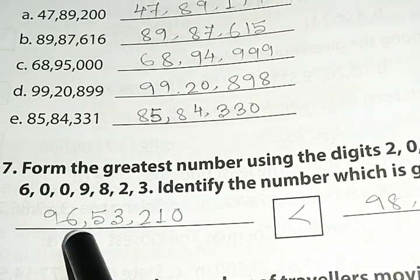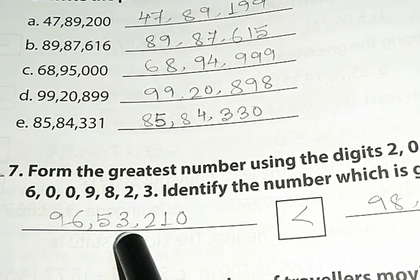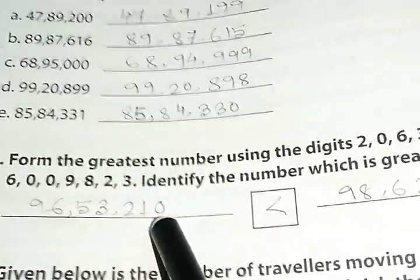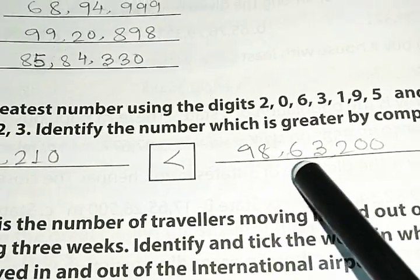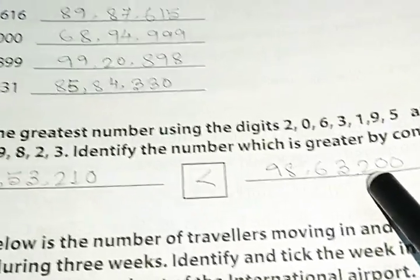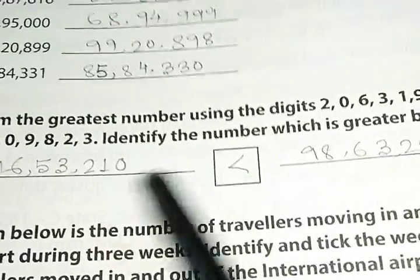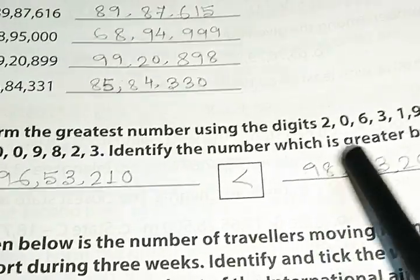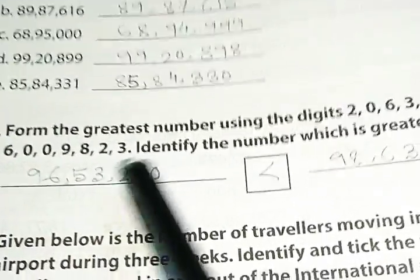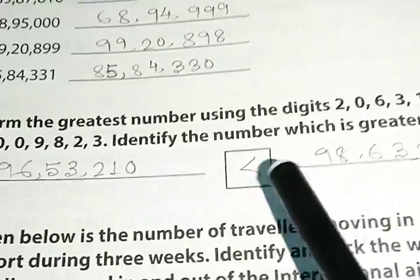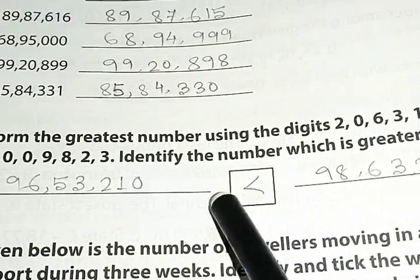So, first one is 96,53,210. And another is 98,63,200. Between the two numbers, there is 98 lakhs and that is 96 lakhs. So, it is smaller than that. That's why there will be less than signs.